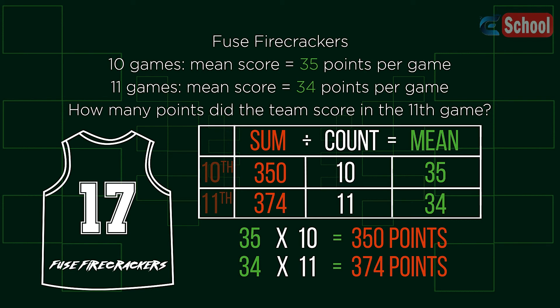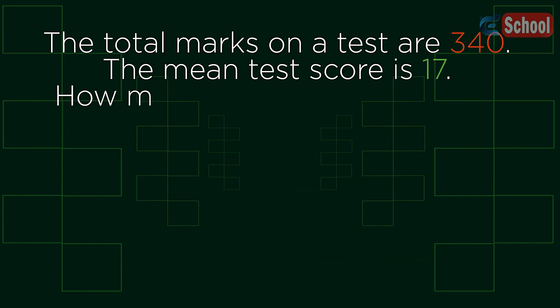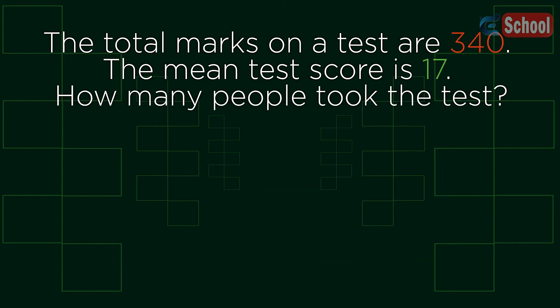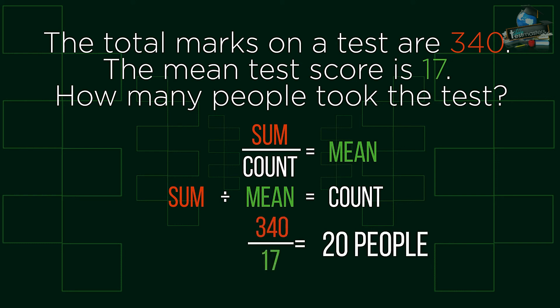So there you have a guide to finding unknown sums. This method also works for finding the number of people — the count. To do so, we use the sum value and mean, and divide the sum by the mean in place of the count, like you can see here. By switching the mean and the count, a simple division lets us find the missing value.